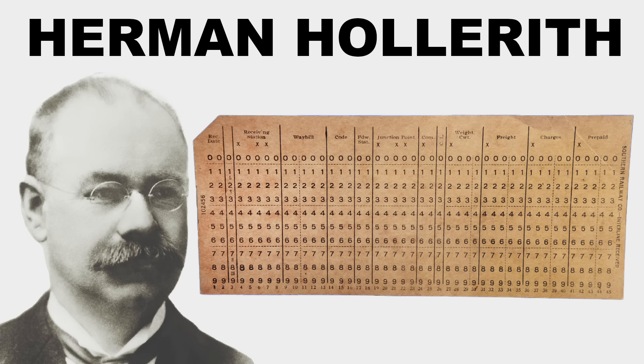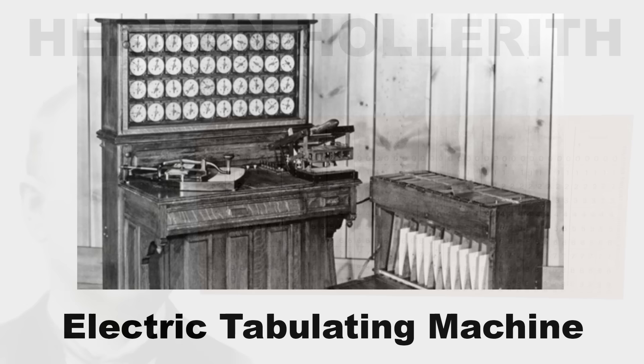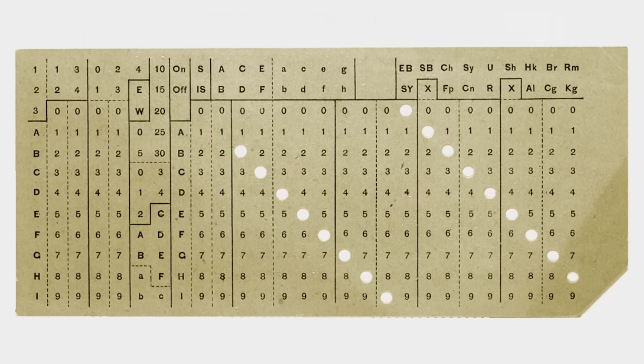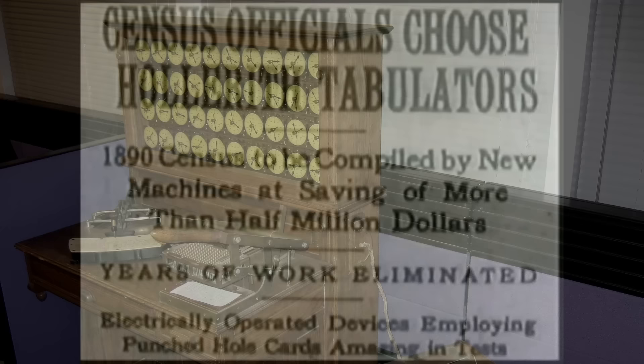Enter Hermann Hollerith, a man who had seen punch cards used by train conductors to represent data of passengers on tickets, and thought that the system could also work for general information. So he invented the electric tabulating machine, which ran on Hollerith cards — punch cards that hold a form of binary data, as each cell can be either punched or not punched. This machine greatly reduced the amount of time needed to complete the 1890 census, and Hollerith went on to continue developing his tabulating machines.